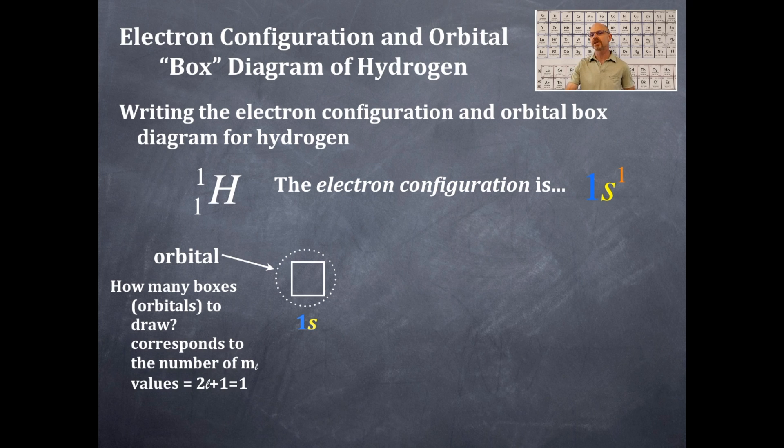The electron configuration is 1s1, but we don't write that 1s1 under the box. We're going to actually label the box according to the principal quantum number and the l value, the angular momentum quantum number. So that 1 that's in blue is the principal quantum number n. The s is the type of orbital or the l value, which is 0. So it's 1s. It's a 1s box, 1s orbital.